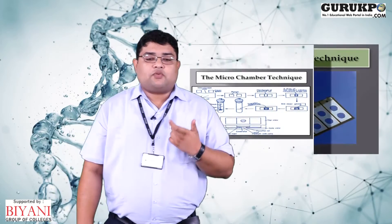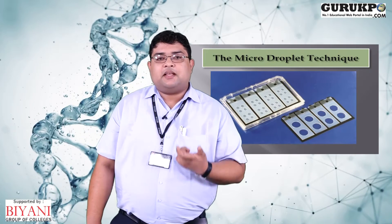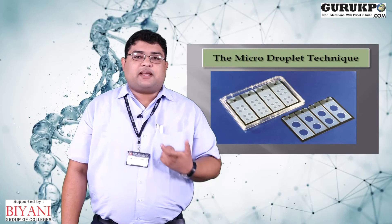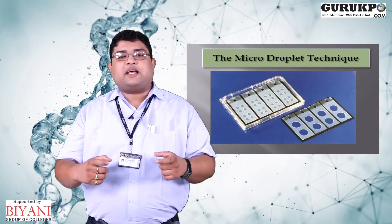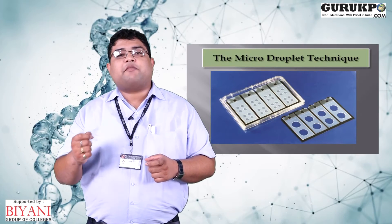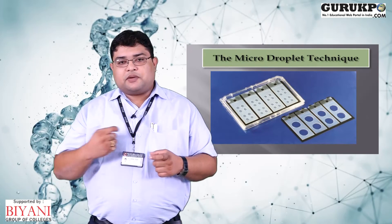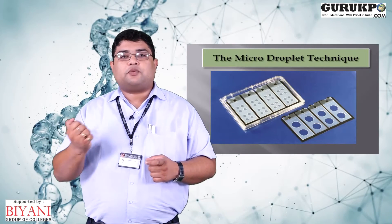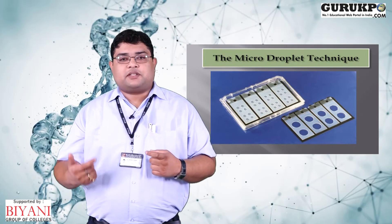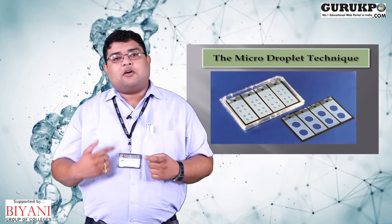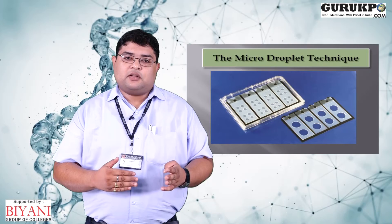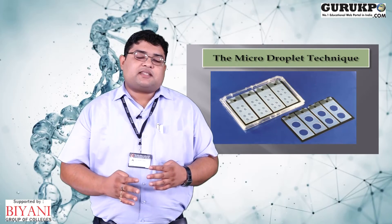The micro drop chamber technique involves micro chambers made up of two types: the outer chamber and the inner chamber. The outer chamber contains sterilized distilled water, while the inner micro chamber contains nutrient liquid media ranging from 0.25 µL to 5 µL. In the inner chambers, single cells or groups of cells are placed, the cover is sealed with parafilm, and the cells are allowed to grow for 21 to 25 days at 25°C ± 2°C with 16 hours day and 8 hours dark, or completely 24 hours of dark conditions.